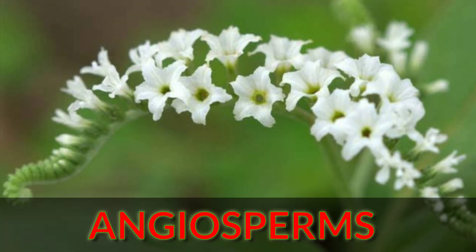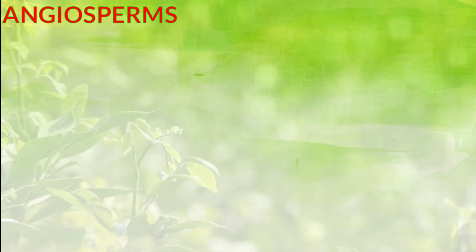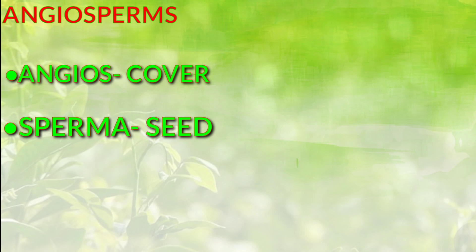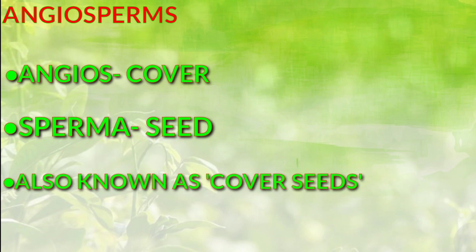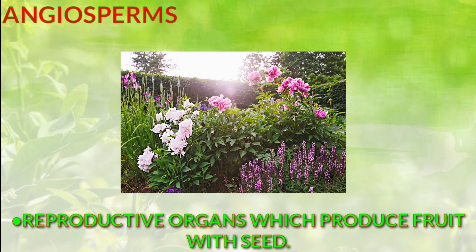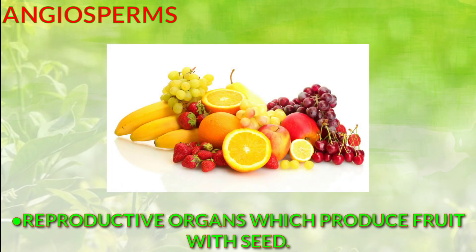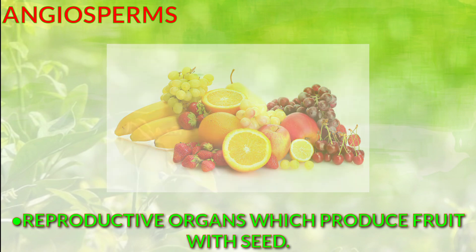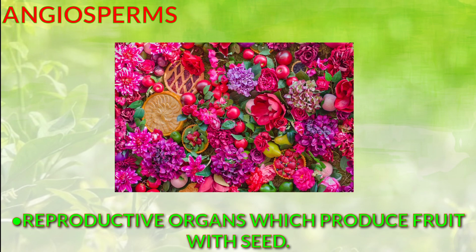Now let's talk about angiosperm. The word angiosperm comes from the Greek words 'angios' which means cover and 'sperma' which means seed, hence known as covered seed. Flowers are the reproductive organ in angiosperm. Flowers develop fruit, and seeds are formed inside those fruits.